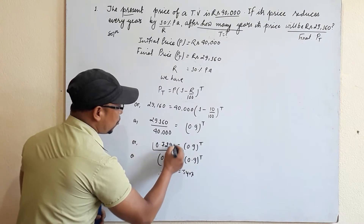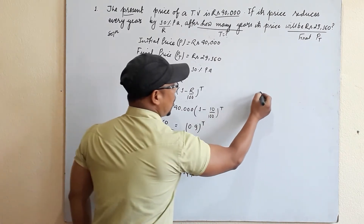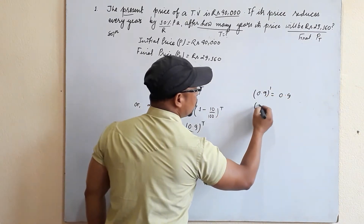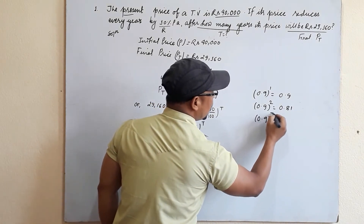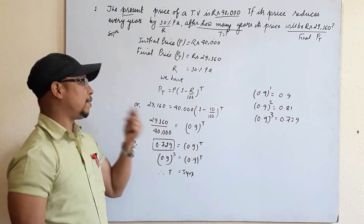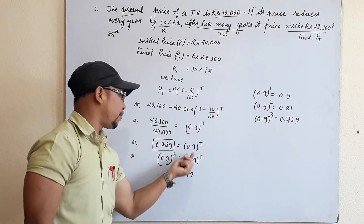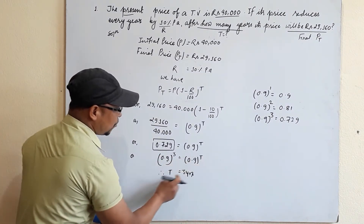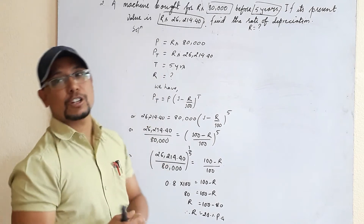We check: 0.9^1 = 0.9 (no match), 0.9^2 = 0.81 (no match), 0.9^3 = 0.729 — it matches! So 0.729 = (0.9)^3, which means T = 3. Therefore, the price will be Rs 29,160 after 3 years.